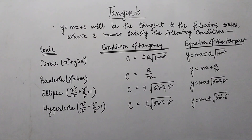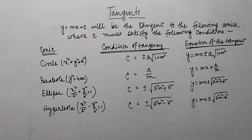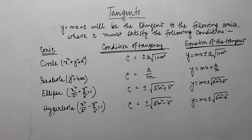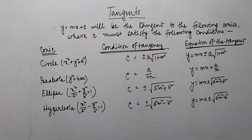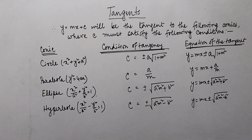Considering a hyperbola x²/a² − y²/b² = 1, we get y = mx + c is a tangent only when c = ±√(a²m² − b²), so the equation of the tangent is y = mx ± √(a²m² − b²). Considering an ellipse x²/a² + y²/b² = 1, the condition is c = ±√(a²m² + b²), giving the tangent equation y = mx ± √(a²m² + b²).